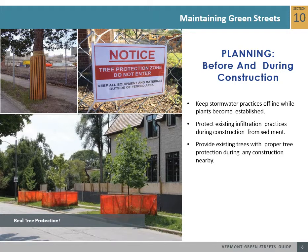Before any construction occurs, protect existing vegetation as well as tree trunks and tree roots. Install required erosion and sediment controls. During construction, conduct regular inspections. Timing when a stormwater facility comes online is vital for project completion. Some facilities, like rain gardens, are required to remain offline until all construction is complete and until vegetation is established.